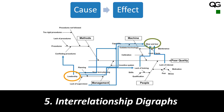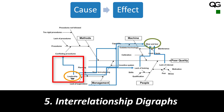Here I have the fishbone diagram and on top of that you can see a lot of blue lines. Let's understand some of these. We have leadership, which was part of management — management was the cause and leadership was the sub-cause. Now there is a relationship between leadership and conflicting procedures. Conflicting procedure was a branch of method, but there is a relationship between leadership and conflicting procedures: if you don't have strong leadership, you will not have systems and procedures in place.